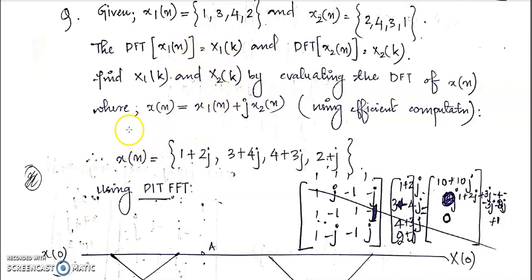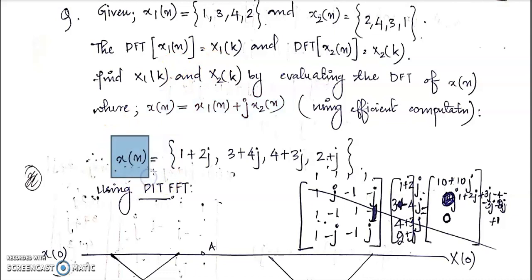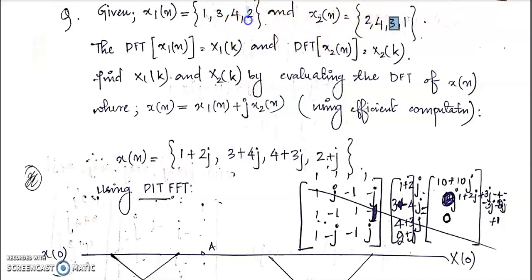The first step is we want to generate x(n). The x(n) is x1(n) plus j times x2(n). Here x1(n) is given and x2(n) is also given. From that, you can compute x(n). At the 0th index, x1(0) is 1 and x2(0) is 2, so we get 1 + 2j. Then 3 + 4j, then 4 + 3j and 2 + j. That is x(n).